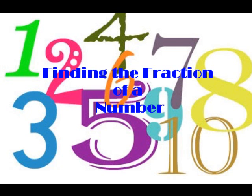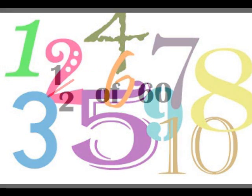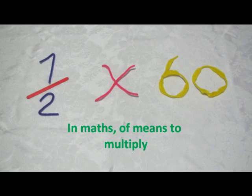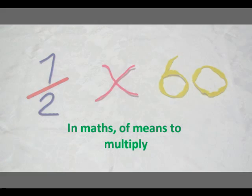Finding the fraction of a number. Let's try and find out what one half of 60 is. In maths, 'of' means to multiply. So one half of 60 equals one half times 60. There are two main methods used when finding the fraction of a number.